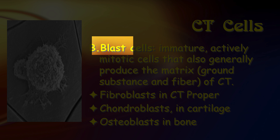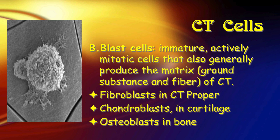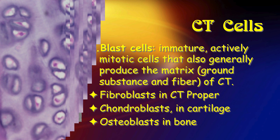Some cells we end with -blast, like fibroblasts, chondroblasts, or osteoblasts. Blast cells are what is usually referred to as immature cells — they're going to go through a change to become the same cell but in a different way. Blast cells are very actively mitotic and they are usually producing the matrix for a tissue. These are the cells that build our tissues: fibroblasts lay down fibrous tissue, chondroblasts build cartilage, osteoblasts build bone.